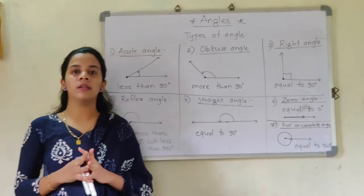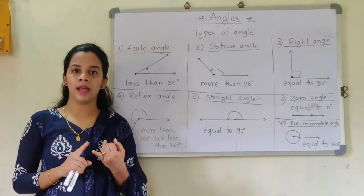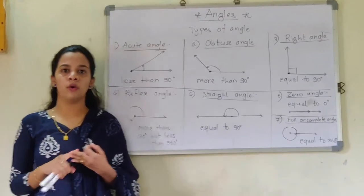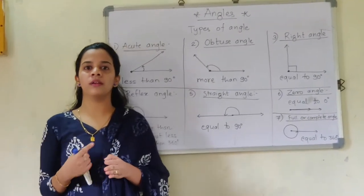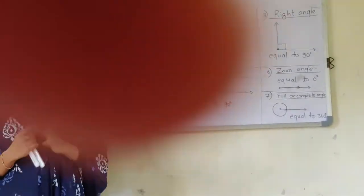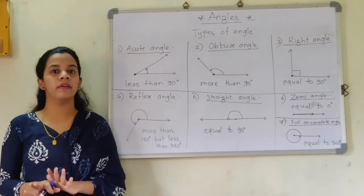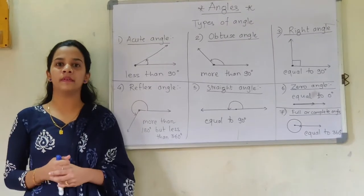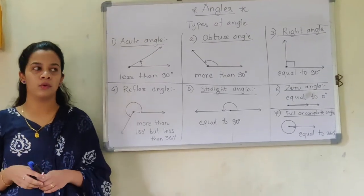In 5th standard you studied the types of angle — we studied acute angle, right angle, and obtuse angle. We were not knowing that there are more types of angle. So right now in 6th standard we are going to study 7 types of angle.